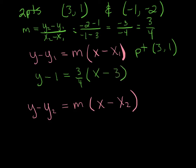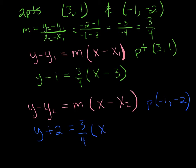If I choose to write it with the point negative 1 comma negative 2, the equation is going to look like y plus 2 equals 3 over 4 times x plus 1 — because x minus negative 1 becomes x plus 1. These two equations look different, but they represent exactly the same line, so either one of these answers would be completely correct.